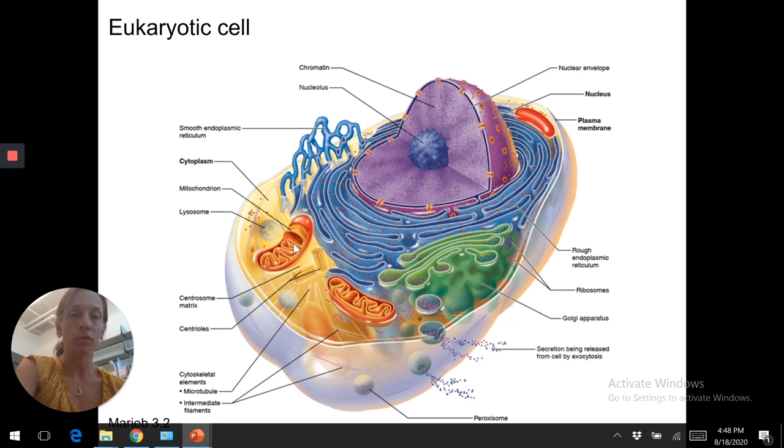Mitochondria are important for ATP production. So our powerhouses, and they actually used to be prokaryotic cells. They have their own DNA. They don't have a nucleus. We've got the Golgi apparatus. So synthesis of carbohydrates, as well as packaging of proteins in order to transport them out of the cell.